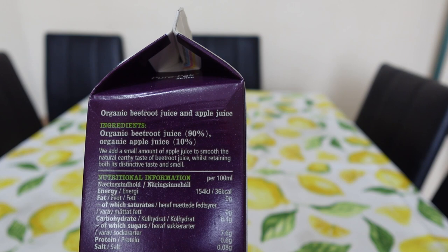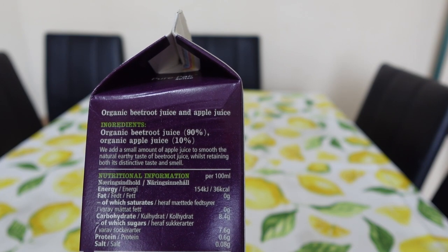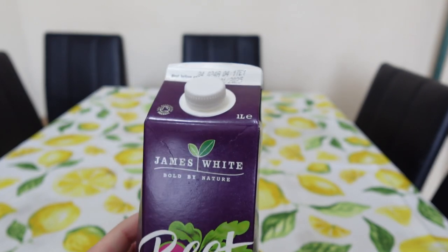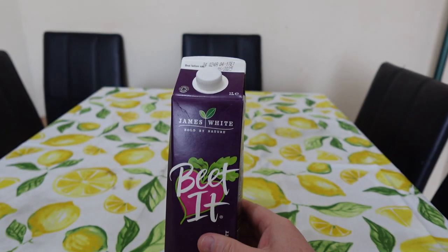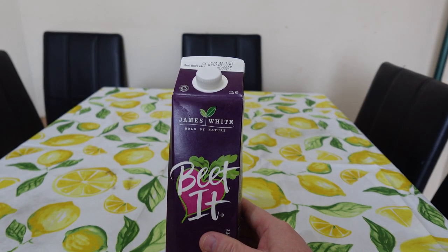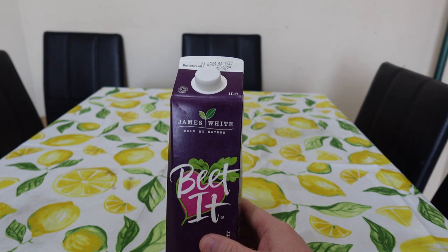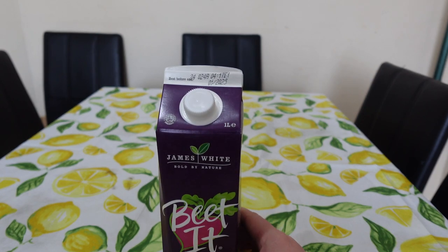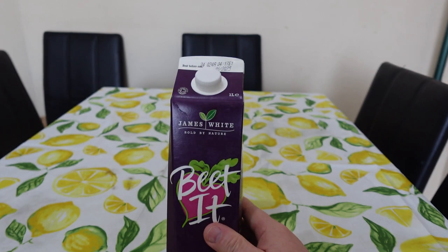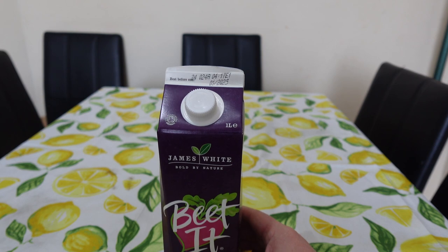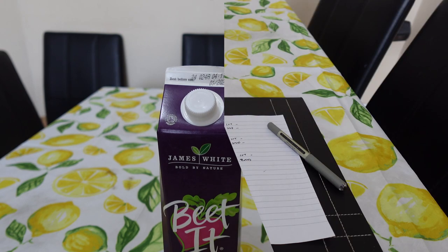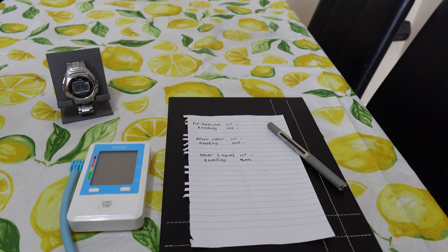So what I'm going to do is I'm going to take my blood pressure, drink a glass of this beetroot juice, and then after an hour test my blood pressure again. Apparently it's supposed to work between 30 minutes and 3 hours.